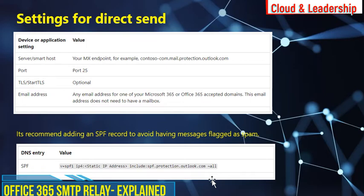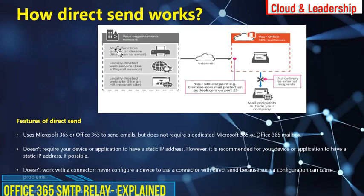No need to enter a username and password for authentication — you can enter your email address and send email. You do need to add values to your SPF record; you must whitelist or add all public IPs from where you are sending emails. With direct send, you can send email using your scanner, printer, or application via your MX record to O365, but you can only send to internal recipients — you cannot send email to external recipients.